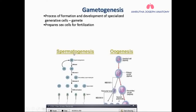Gametogenesis contains two parts: spermatogenesis in the male and oogenesis in the female. There are sex cells that give rise to your sperm and the oocyte, and this is basically for fertilization.